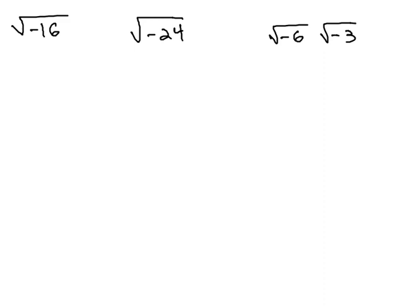As we do this, we're going to split this into two parts. There's the negative and the 16. Whenever we see a negative under a square root, we remember that the square root of negative 1 is i. Any negative number under a square root will pull an i out, and that takes care of the negative.